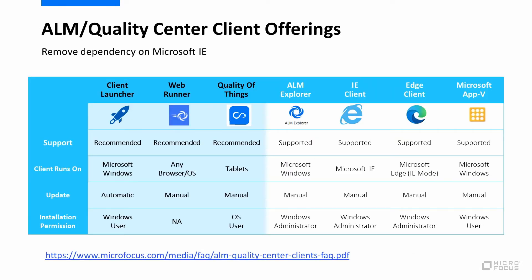In the client offering area, we remove the dependency on Microsoft Internet Explorer by providing three recommended options. The client launcher is a simple Windows desktop application that supports the entire functionality of ALM. The web runner is a lightweight web interface that supports most of the common functionality and can be run from any browser and any operating system. And the Quality Anywhere app can run on tablets for offline testing.